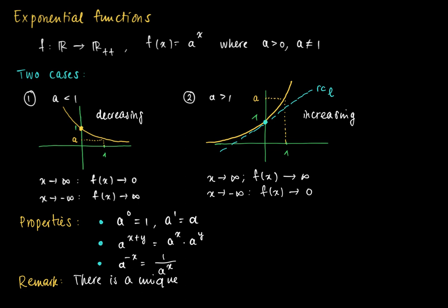And there's a unique exponential function such that the tangent line has slope 1. So here's the slope 1. Slope of the line equals 1.